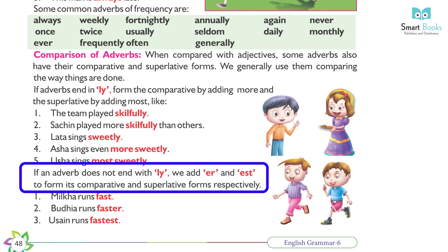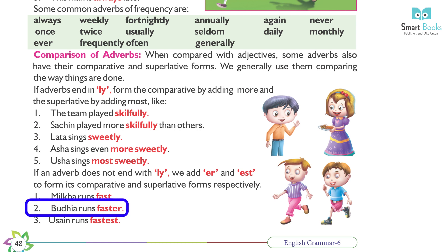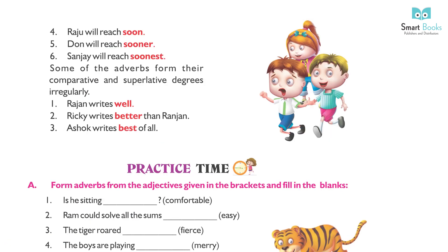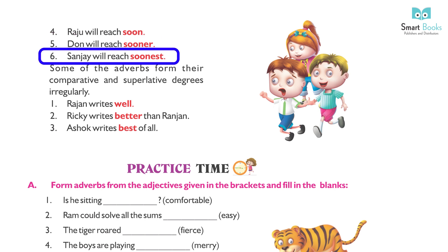If an adverb does not end with -ly, we add -er and -est to form its comparative and superlative forms respectively. 1. Milka runs fast. 2. Budhya runs faster. 3. Usain runs fastest. 4. Raju will reach soon. 5. Don will reach sooner. 6. Sanjay will reach soonest.